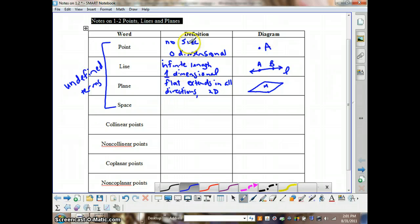So points are zero-dimensional, lines one-dimensional, plane two-dimensional. And when we talk about space, we're talking about the set of all points. So we have length, width, and height. We're talking about three-dimensional. And there's no representation for that.